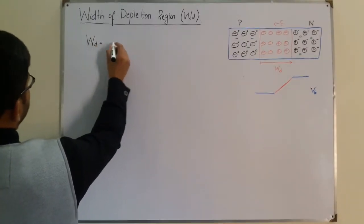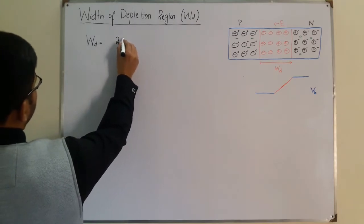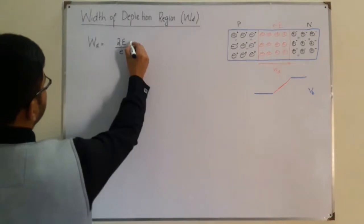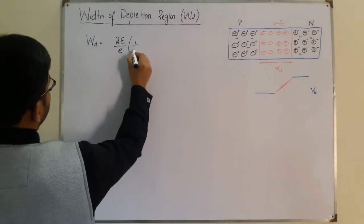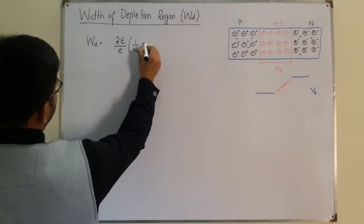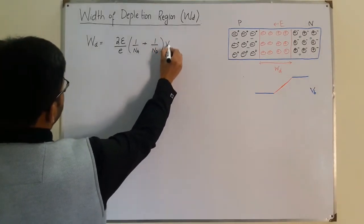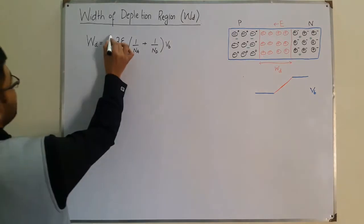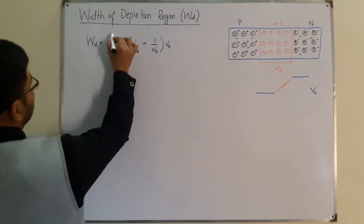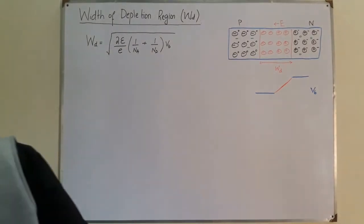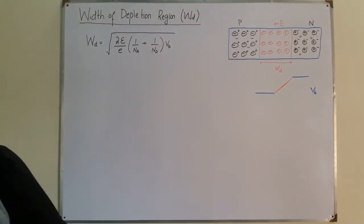The width of this depletion region, WD, is equal to the square root of 2 epsilon over e times (1 over NA plus 1 over ND) times VB.